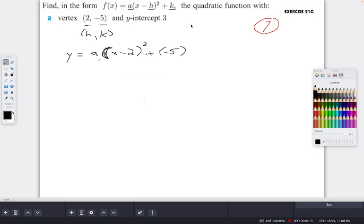At this point we still need to find our a. We have our h and our k, and they give you the y-intercept. What they're telling you, and you should always remember, is that the y-intercept, your x is 0. So you know that this is a coordinate (0, 3).